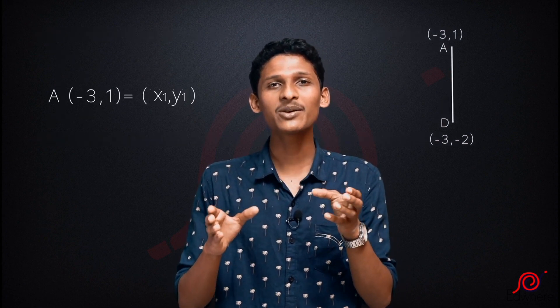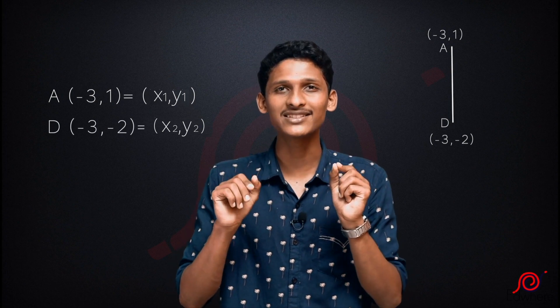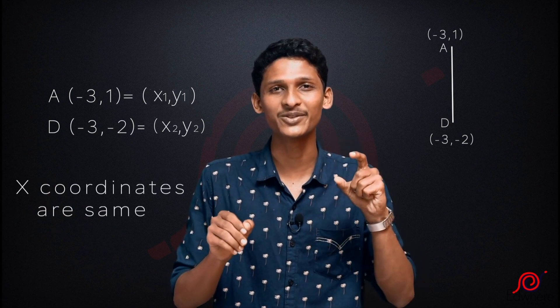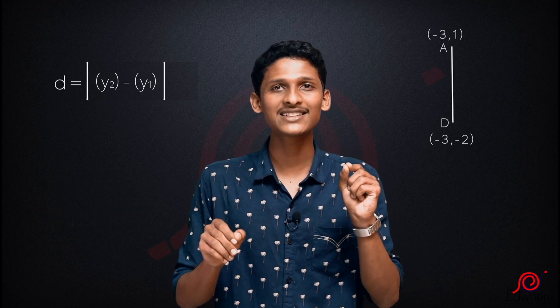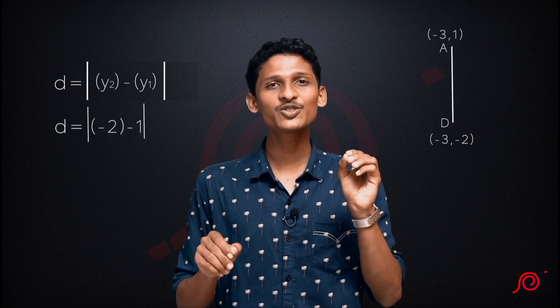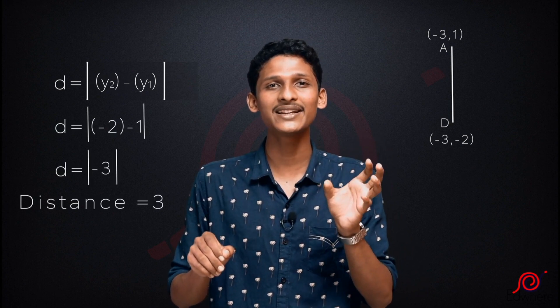Now we have AD. A is (-3, 1) and D is (-3, -2). These two points have the same x-coordinates, so the distance is mod of y2 minus y1, equal to mod of (-2 minus 1), that is mod of -3, which is 3.